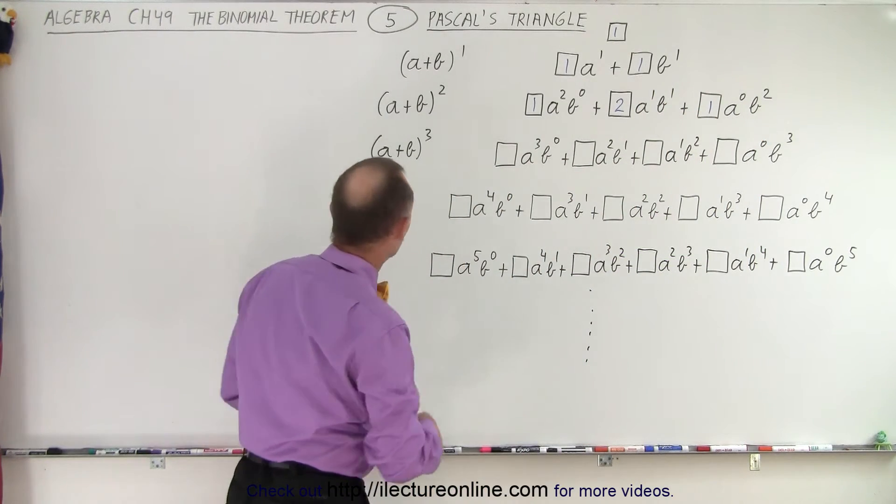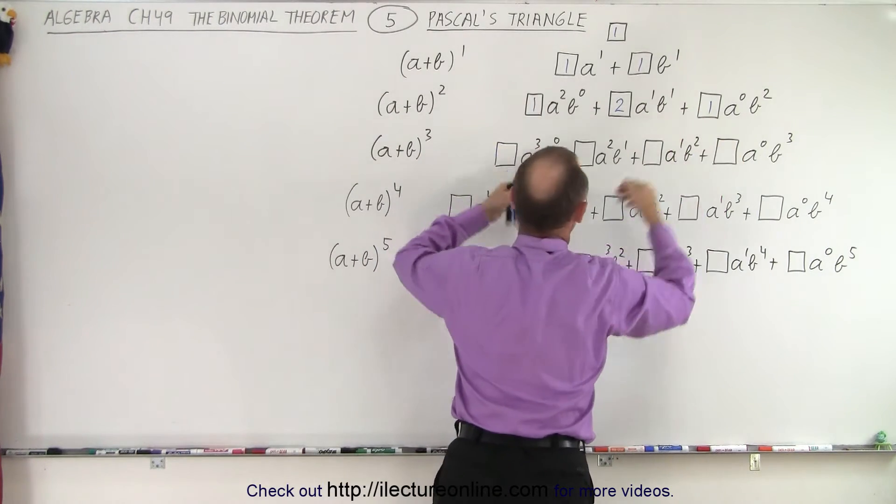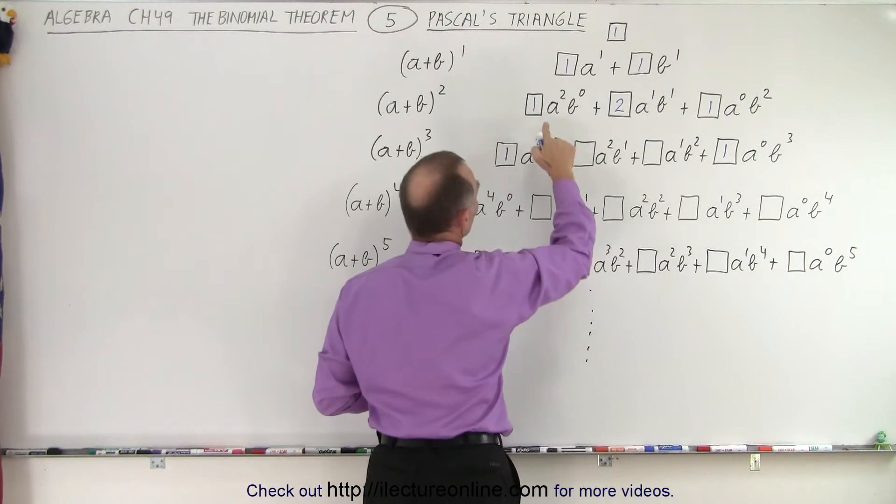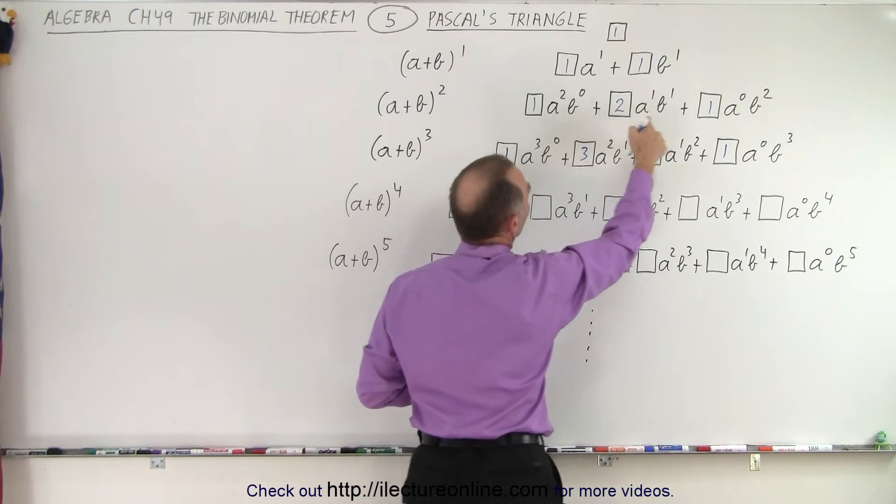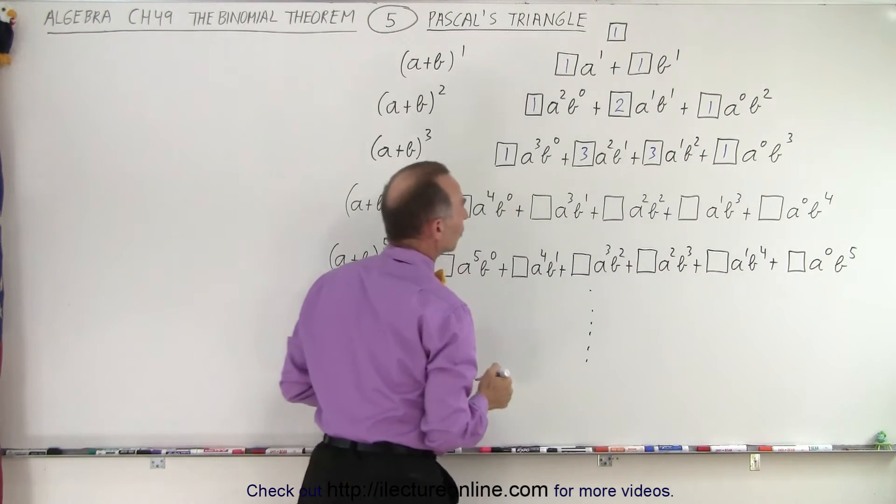Then we get to the next line. We get a plus b quantity to the third power. Notice the 1s that move out to the side. And then to get the two other numerical coefficients, we take 1 plus 2, which is 3, and 2 plus 1, which gives us 3. That's how we obtain the numerical coefficients.